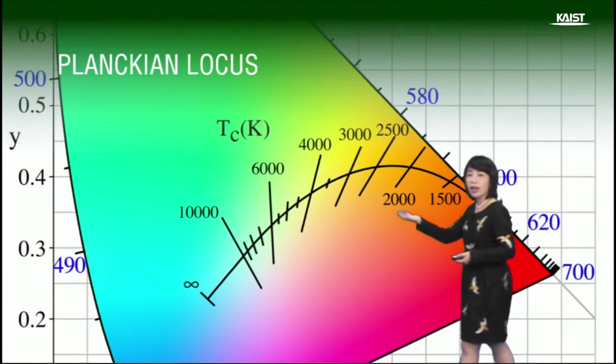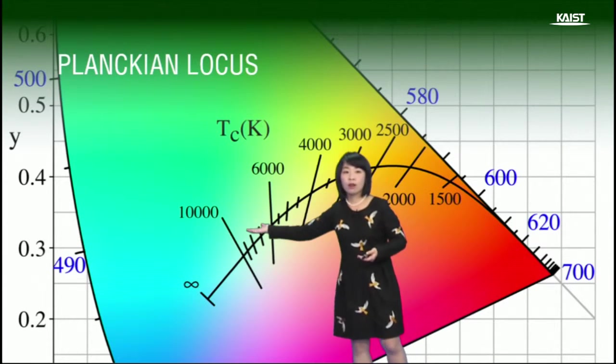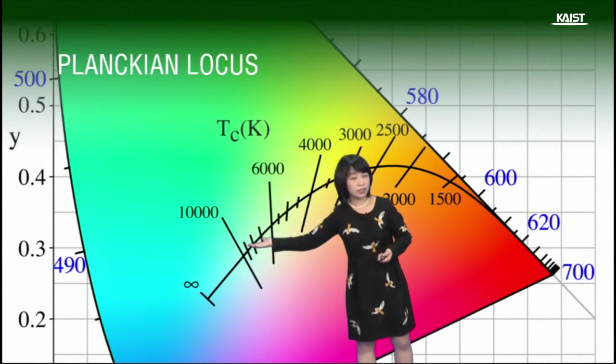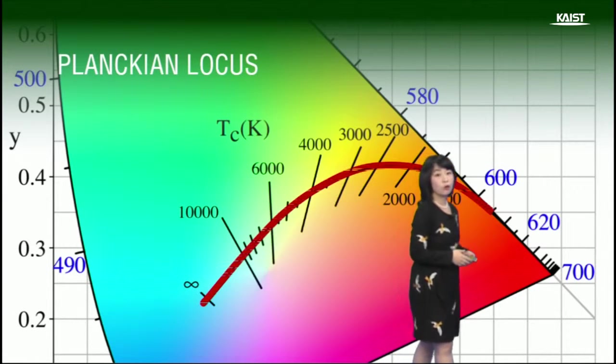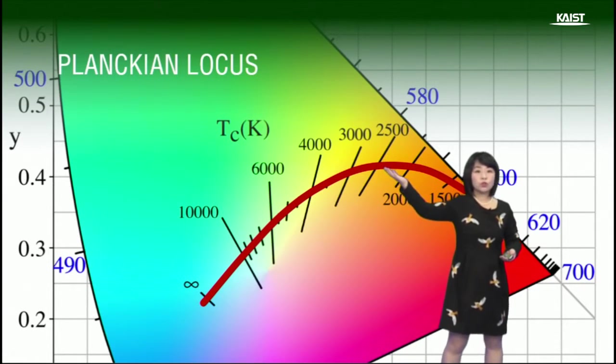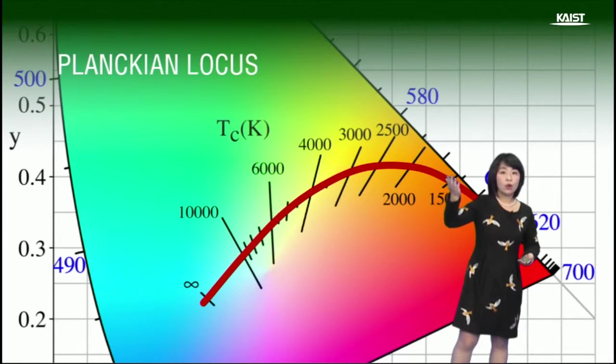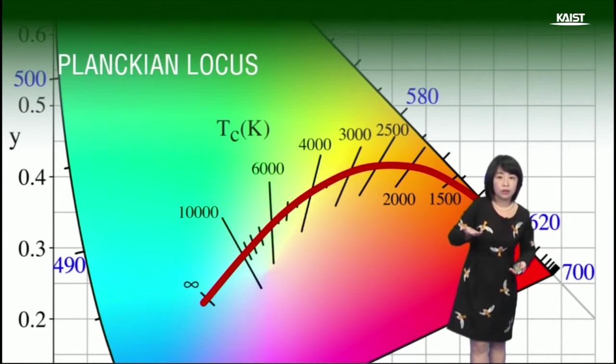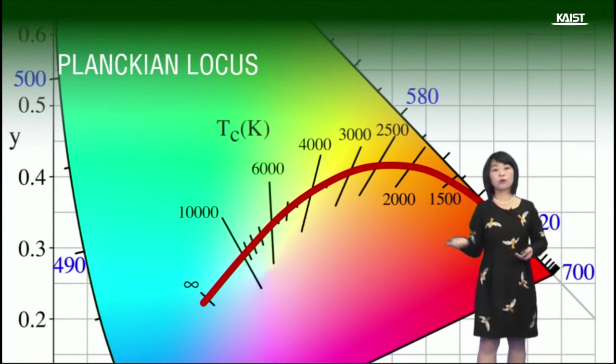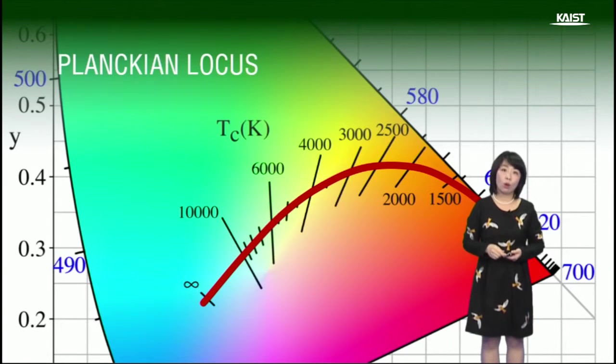At around 10,000 Kelvin, a black body emits bluish light. Therefore, this curve corresponds to the hue of black body with various temperatures. And this curve is called the Planckian locus.